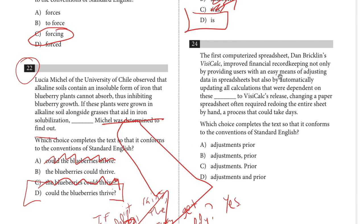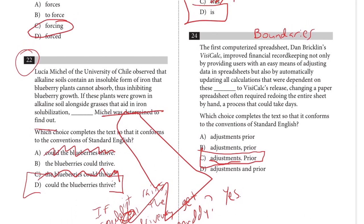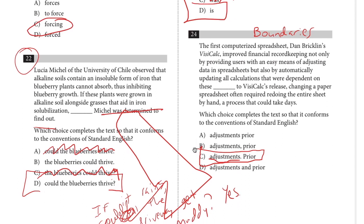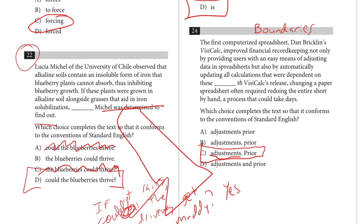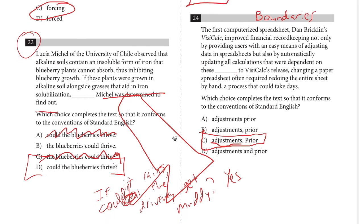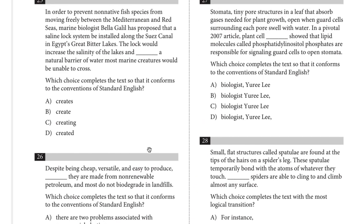Number twenty-four: the first computerized spreadsheet, Dan Bricklin's VisiCalc, improved financial record keeping not only by providing users with an easy means of adjusting data in spreadsheets but also by automatically updating all calculations dependent on those adjustments. These are boundary questions — about boundaries between sentences or clauses. Careful reading and perhaps simplifying complex sentences is the recipe for these questions.